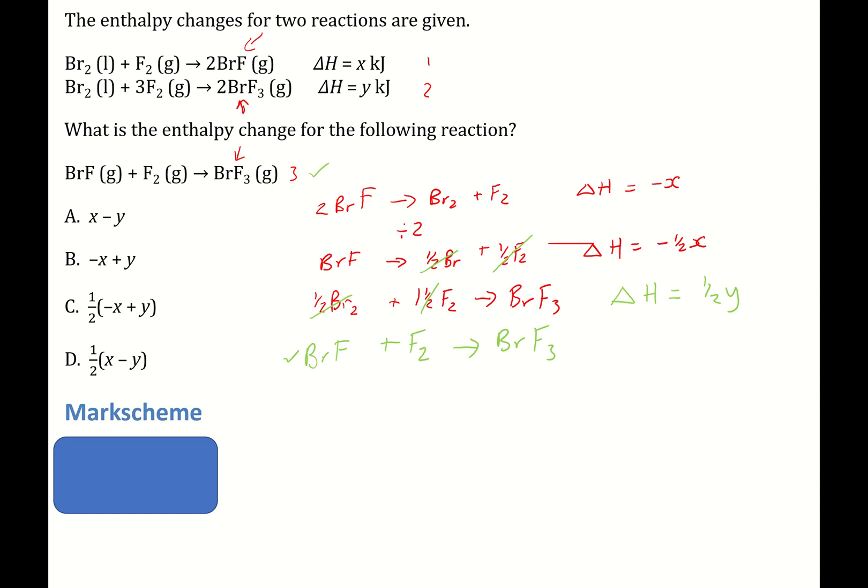Now all we need to do is put these equations together. So we have a half on both sides, so that's something common. And we have a minus x, and we need to add this to Y. That kind of satisfies things. And according to this, it would be C.